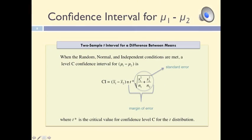In some situations we need to estimate a confidence interval for the difference between the two groups. To obtain this confidence interval, all we have to do is compute the difference between the two sample means, and then add and subtract the margin of error to obtain the upper and lower limits of this interval. The margin of error is obtained by multiplying the standard error by t-star. T-star can be obtained from table C in the textbook, based on the confidence level that we desire and the degrees of freedom, or we could use software to compute this confidence interval.